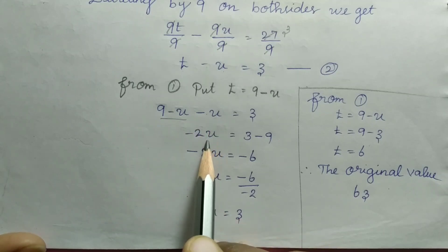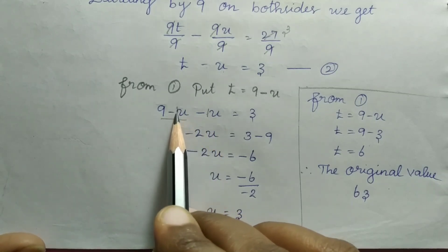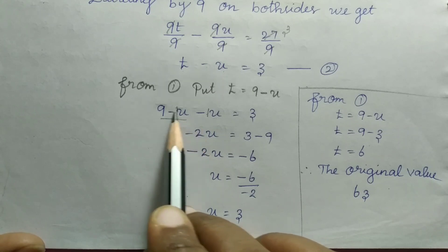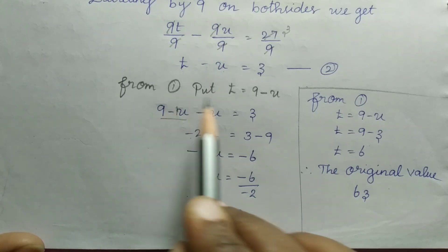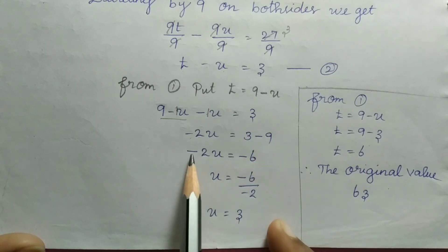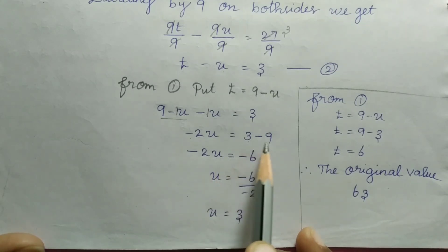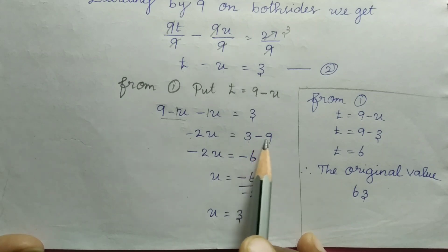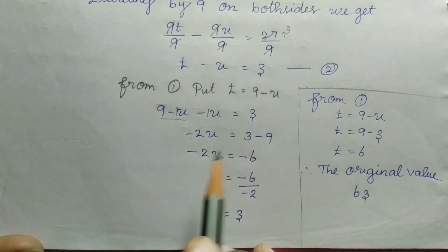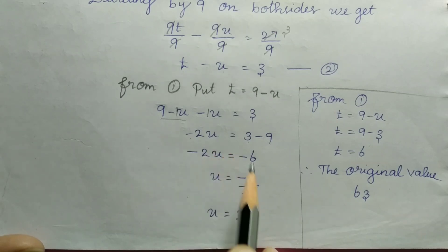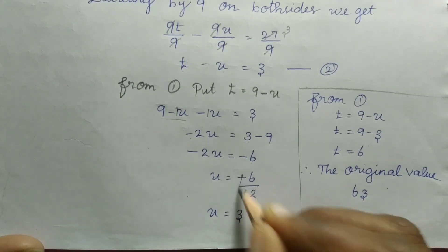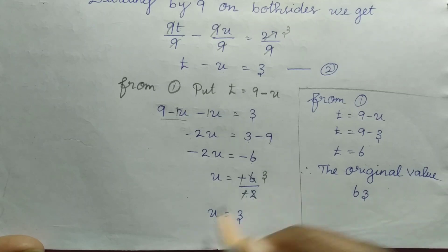The 2 values are minus. The numerical coefficient is 1. 1 plus 1 is 2. Minus sign is here: minus 2u plus 9 equals 3. Minus 9 is here, so minus 2u equals 3 minus 9, which gives minus 2u equals minus 6. Dividing: minus 6 divided by minus 2. Minus minus cancels. 6 divided by 2 is 3. So u equals 3.